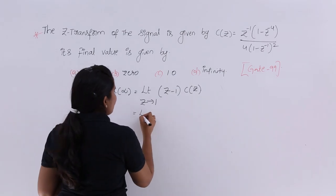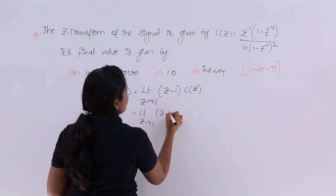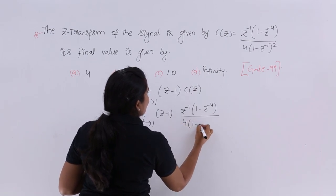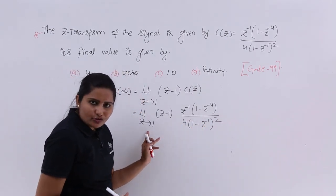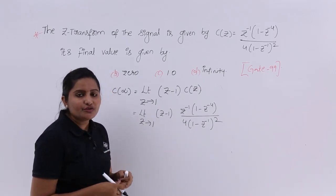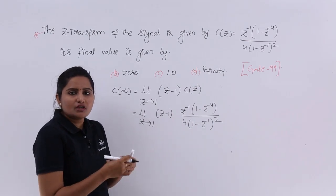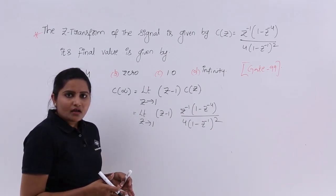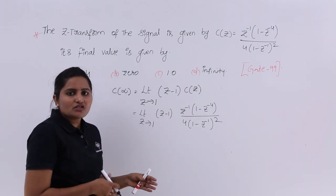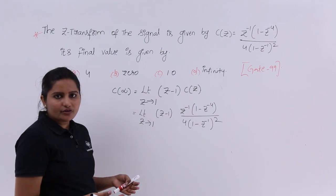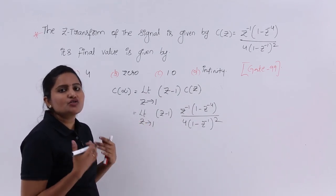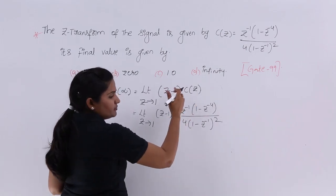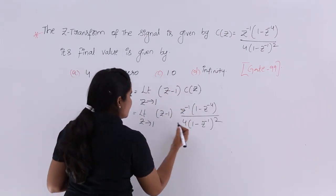Now I am going to apply that: limit Z tending to 1 of (Z - 1) into Z⁻¹(1 - Z⁻⁴) divided by 4 into (1 - Z⁻¹) whole square. If I substitute Z = 1 directly, I get 0, which is a problem. We need to vanish the chances of getting 0 or infinity, so I am not going to substitute directly. I want to reduce this expression first.